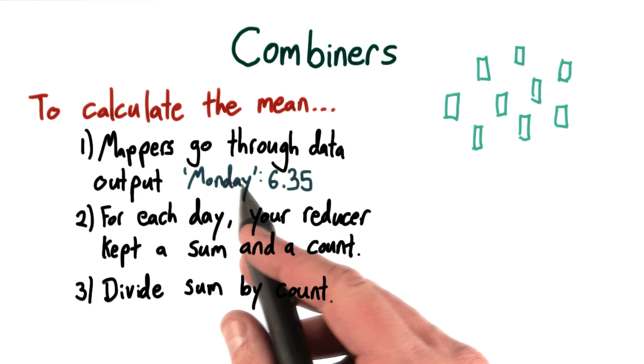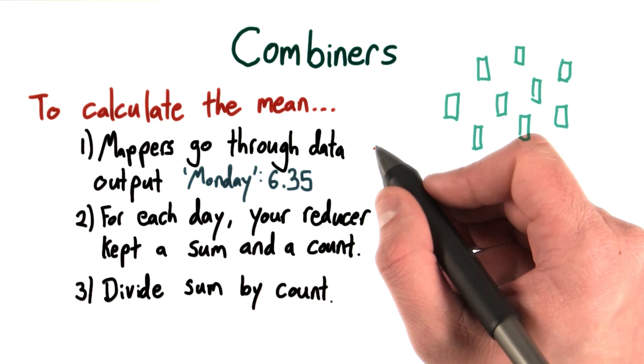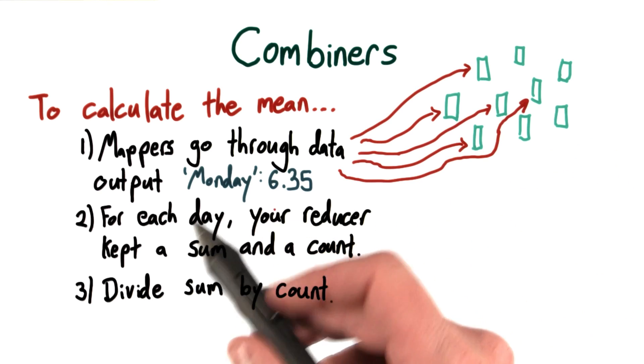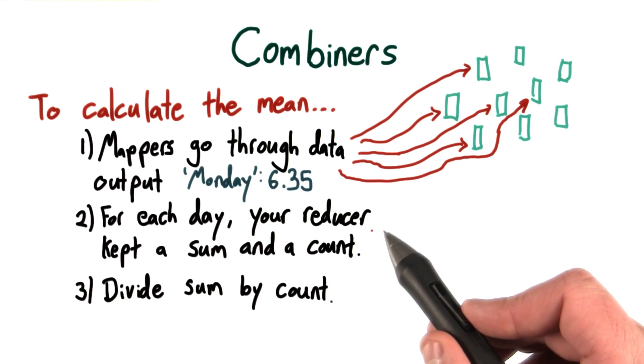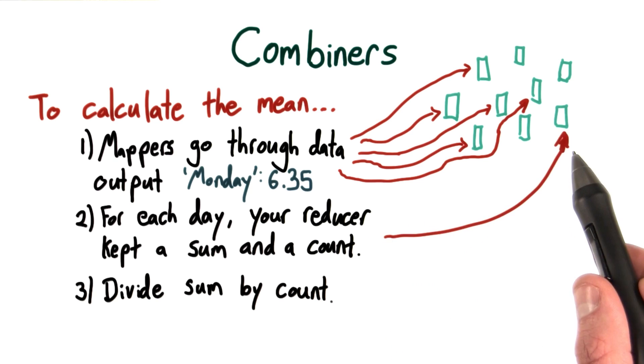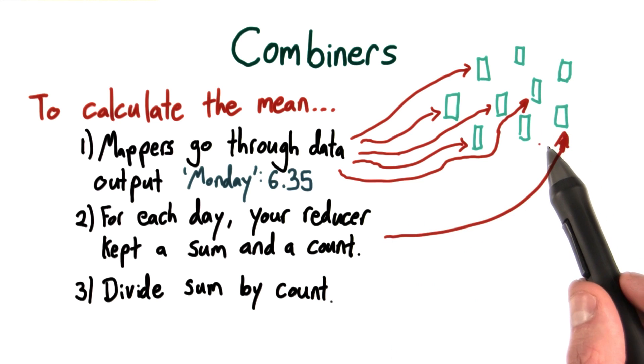Well, for step 1, the mappers were all over the place. There were mappers anywhere there was relevant data. But for any given day, the reduction had to happen on a single machine where that reducer was living. And actually, that's enough. We've already exposed a problem.